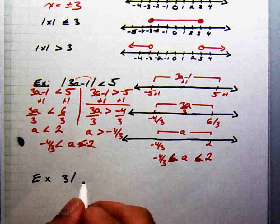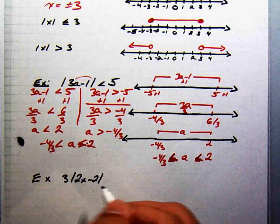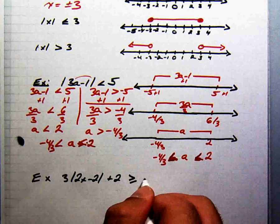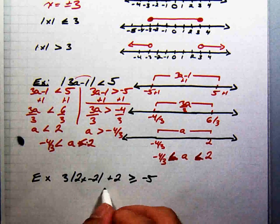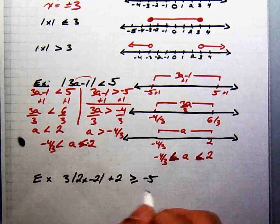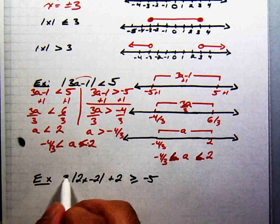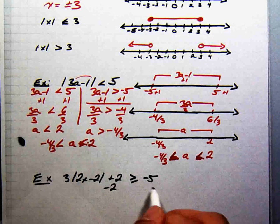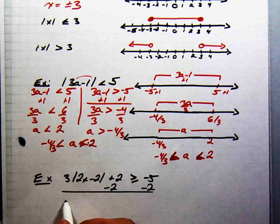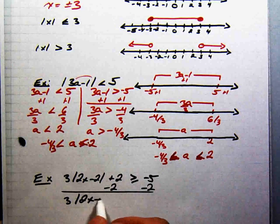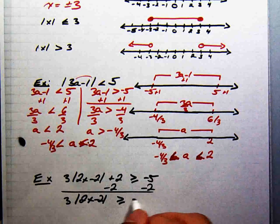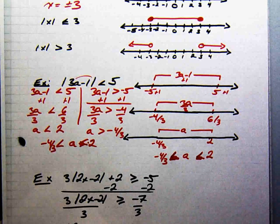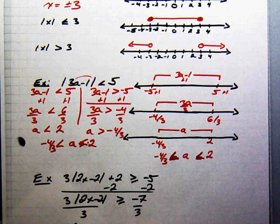Here's a seemingly complicated one: 3 times the absolute value of 2x minus 2, plus 2, is greater than or equal to negative 5. Before splitting into two inequalities, we need to clear away the positive 2 and the 3. Subtracting 2 from both sides gives 3 times the absolute value of 2x minus 2 is greater than or equal to negative 7, and dividing by 3 gives the absolute value of 2x minus 2 is greater than or equal to negative 7 thirds.